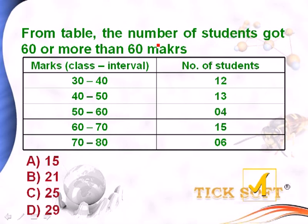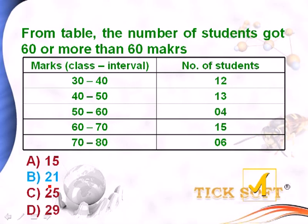From the table, the number of students who got 60 or more than 60 marks is: option a, 15; option b, 21; option c, 25; option d, 29. Looking at the table, the entries for 60 and above are 15 and 6, giving a total of 21 students who got 60 or more than 60 marks. So option b, 21, is the right answer.